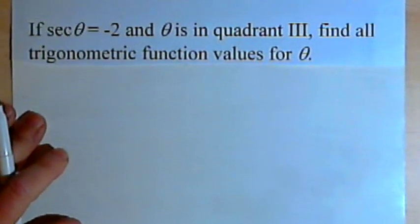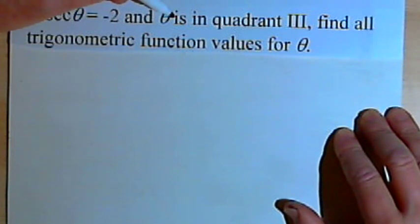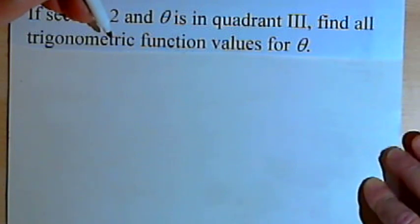So here's our problem. This one says if the secant of theta equals negative 2 and theta is in quadrant 3, find all trigonometric function values for theta.